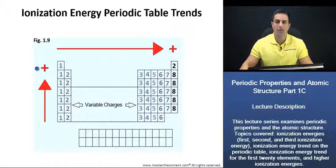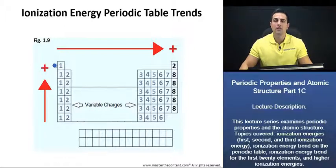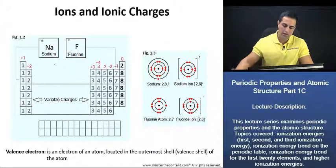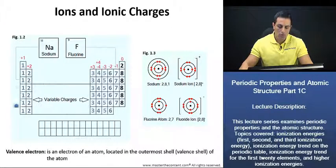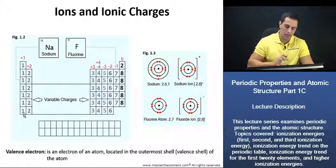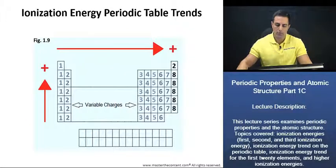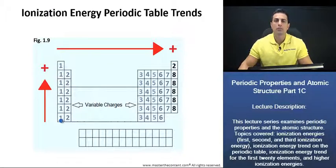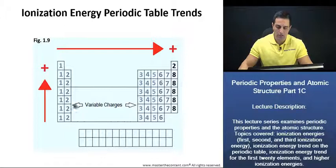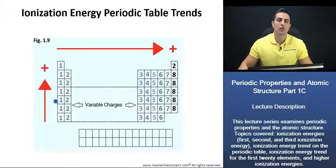If you recall from part 1B of this lecture series, we demonstrated that group one elements have one valence electron. To obtain a full outermost shell, they would rather give up that one electron than gain electrons. Thus, on the left side of the periodic table, we can generalize that these elements are going to give up their electrons rather than gain electrons.